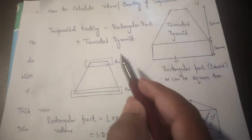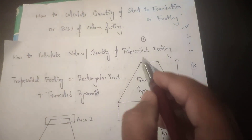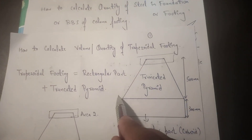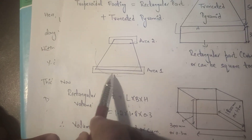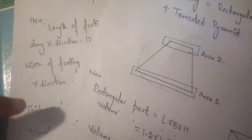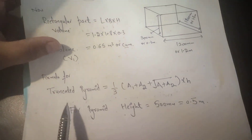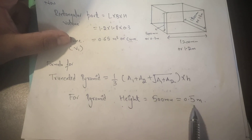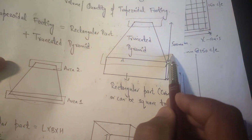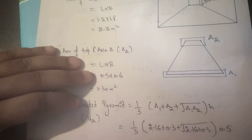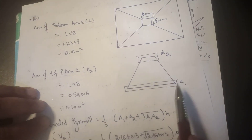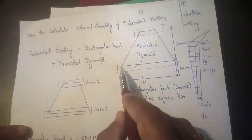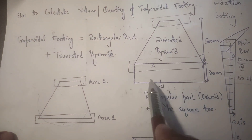Area 1 is the bottom area and Area 2 is the top area of the truncated pyramid. The height is equal to 500mm.